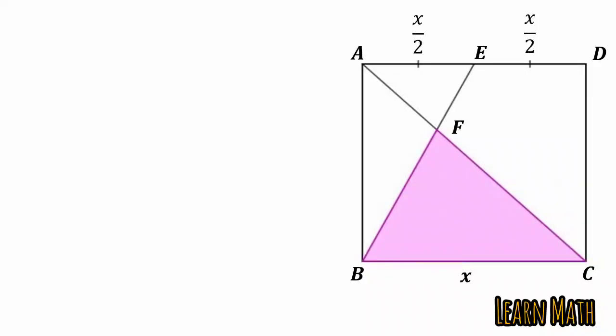Now look at the triangles, triangle BFC and triangle AFE. In these triangles, angle A is equal to angle C because AD and BC are parallel. Similarly, angle E is equal to angle B, and these angles are also equal because alternate angles. So these two triangles are similar.